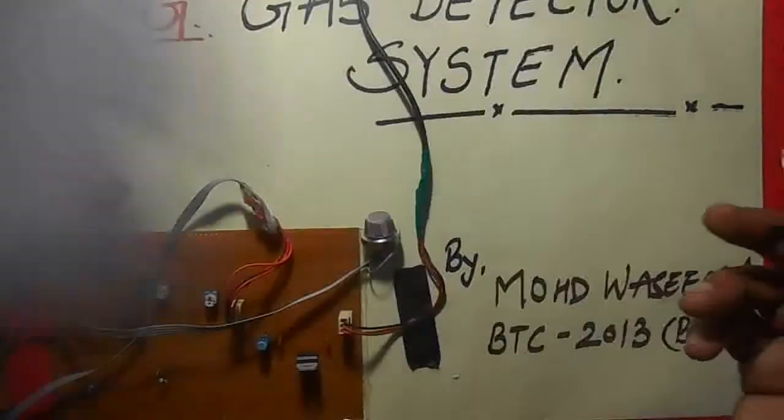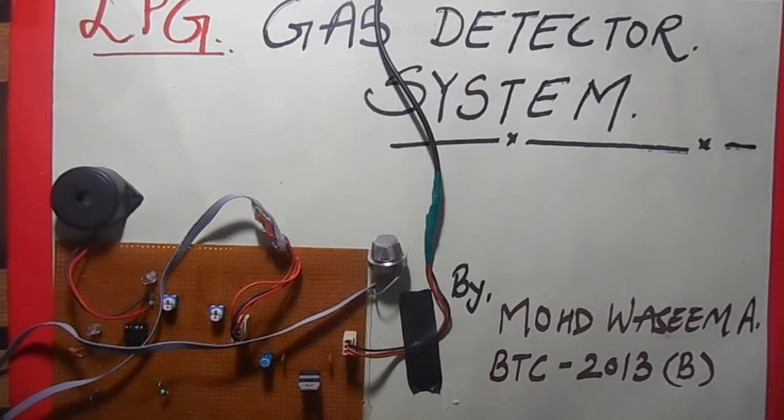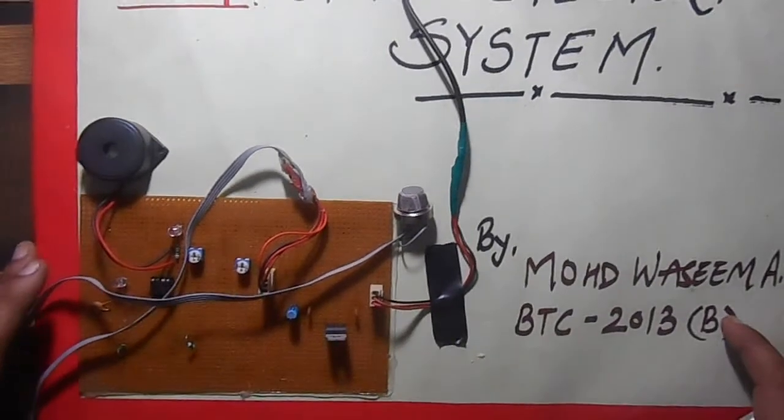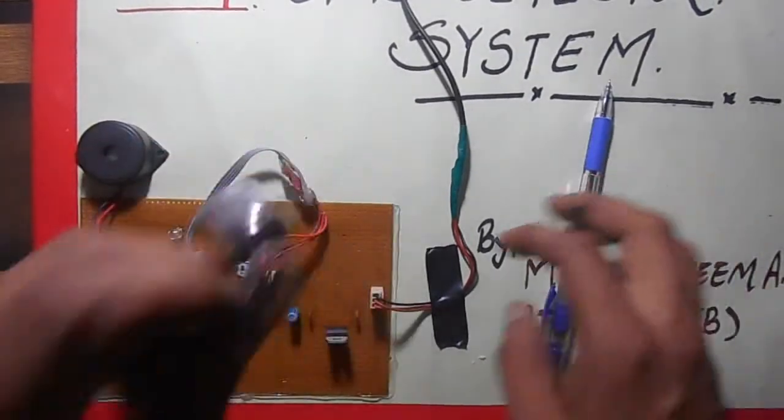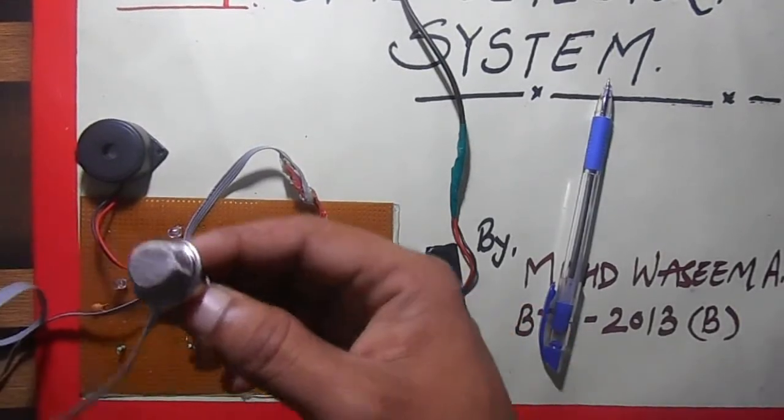So here we have prepared this circuit. This is the main circuit board and this is the sensor which I have prepared. This is the sensor, and here I am using this as LPG gas.